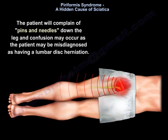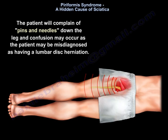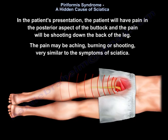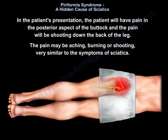The patient will complain of pins and needles down the leg, and confusion may occur where the patient may be misdiagnosed as having a lumbar disc herniation. In presentation, the patient will have pain in the posterior aspect of the buttock with pain shooting down the back of the leg. The pain may be aching, burning, or shooting — very similar to symptoms of sciatica.